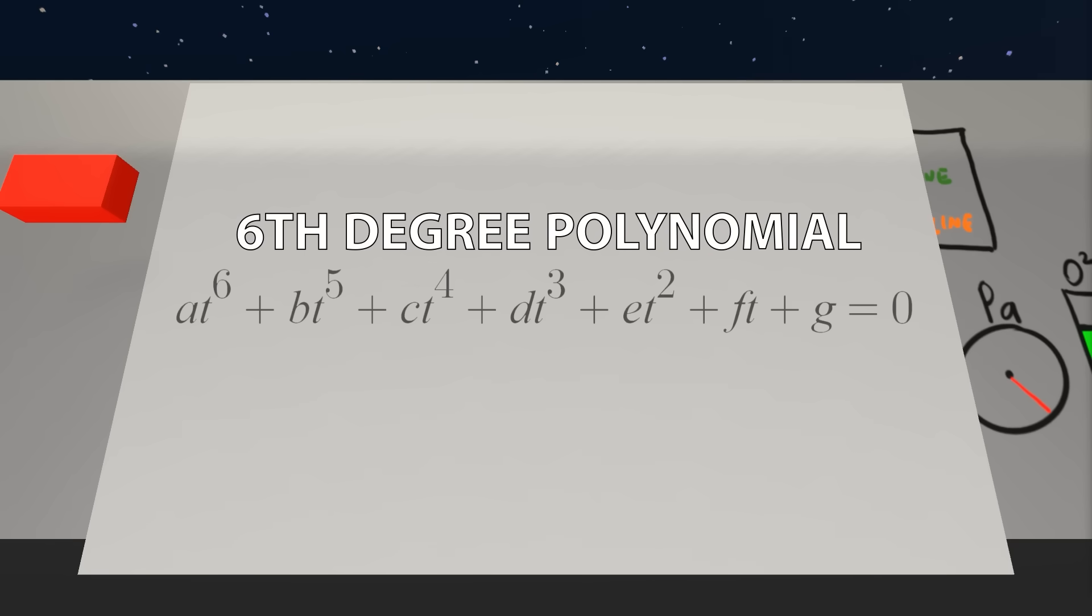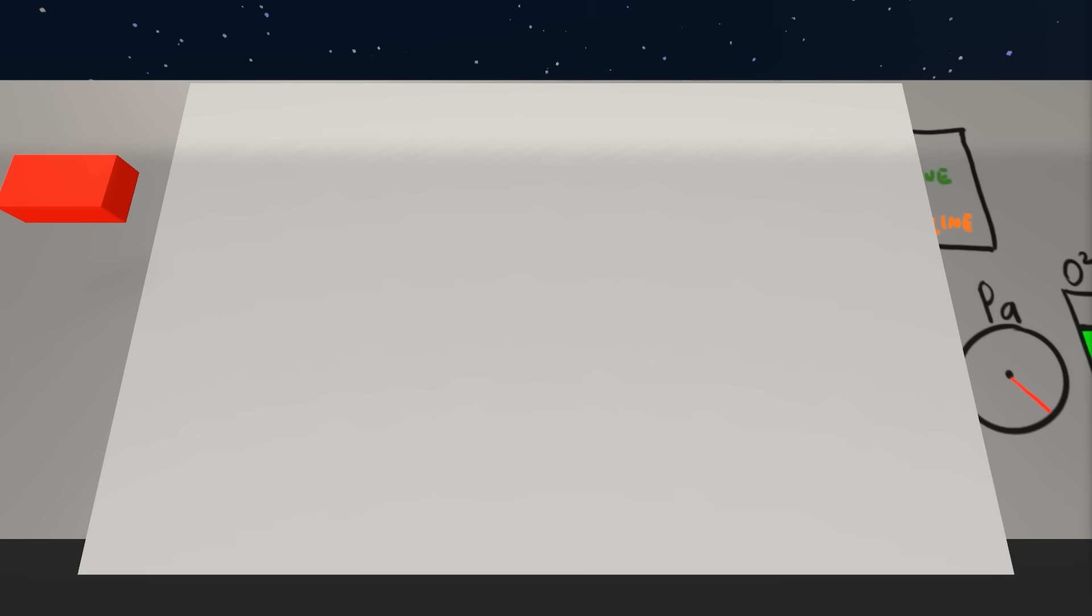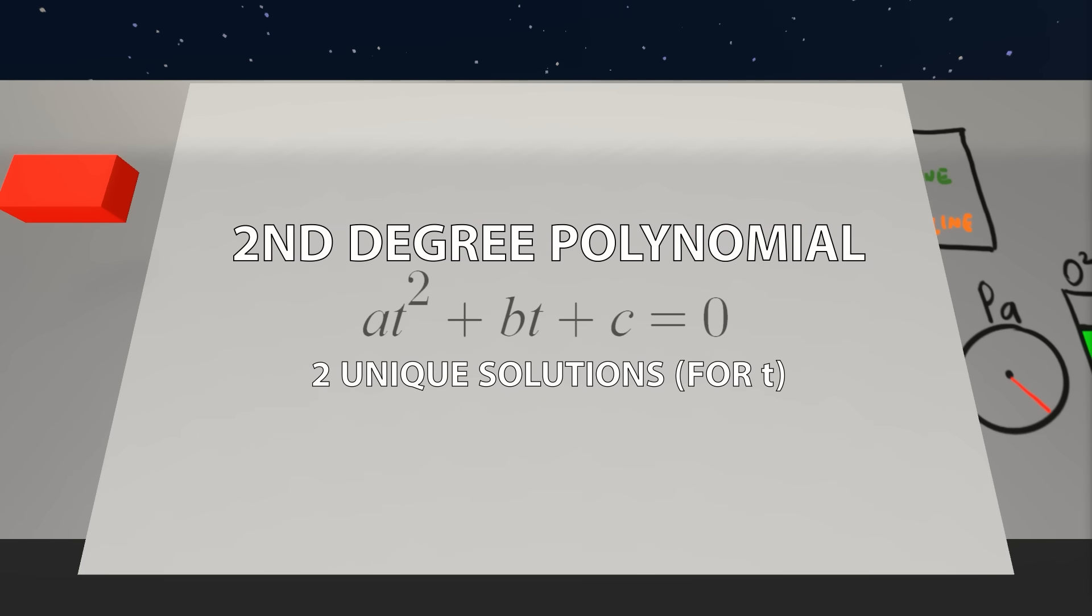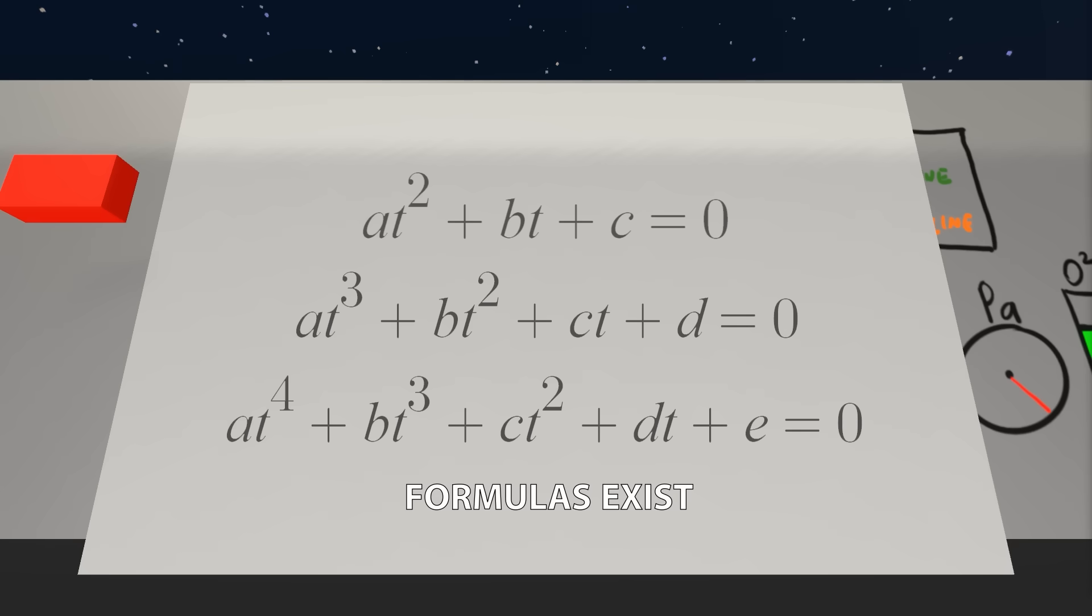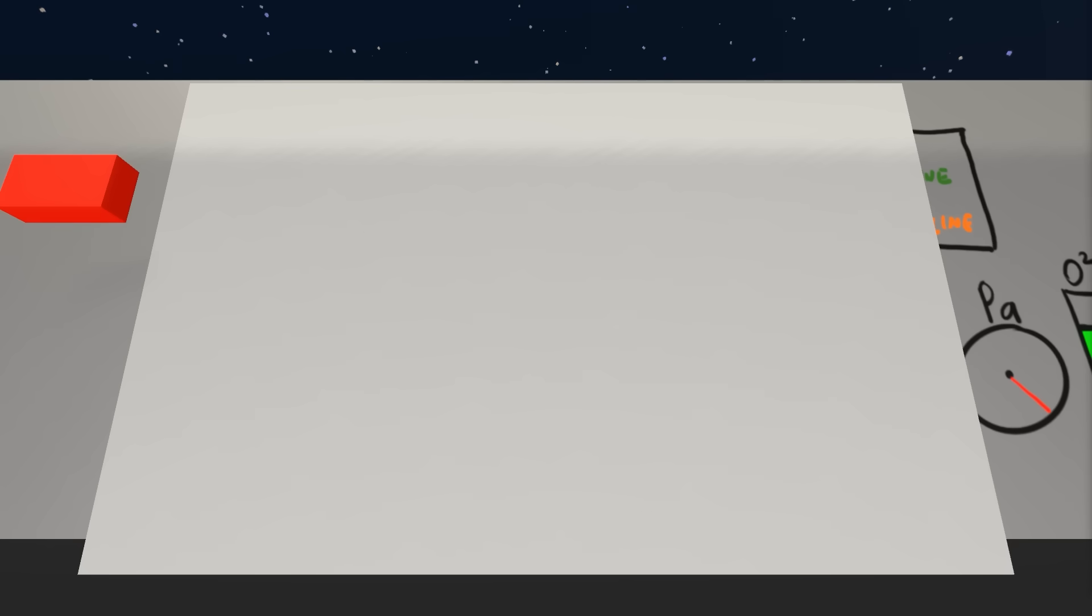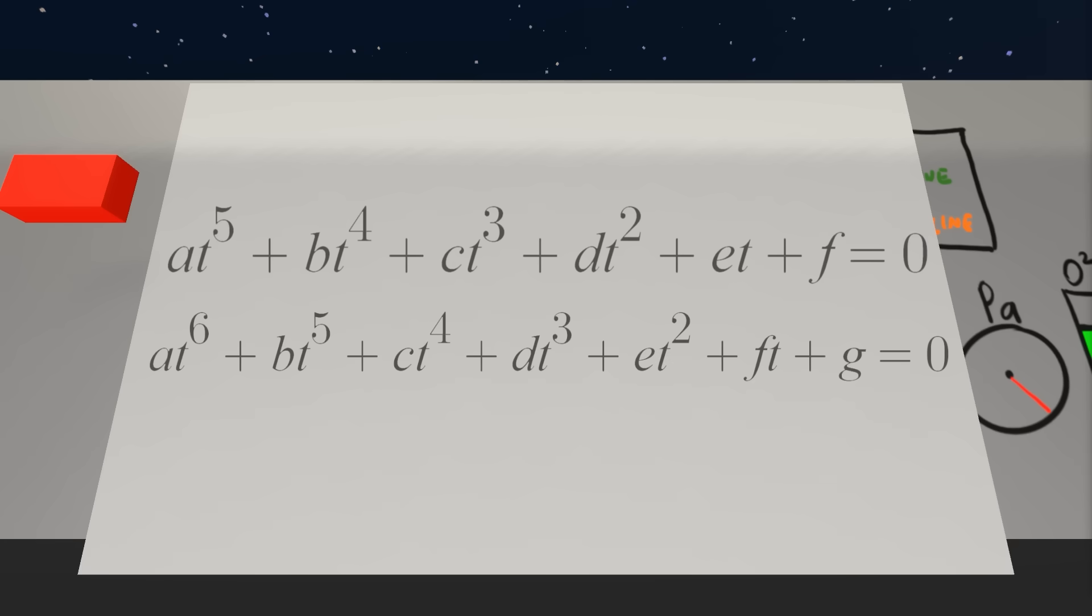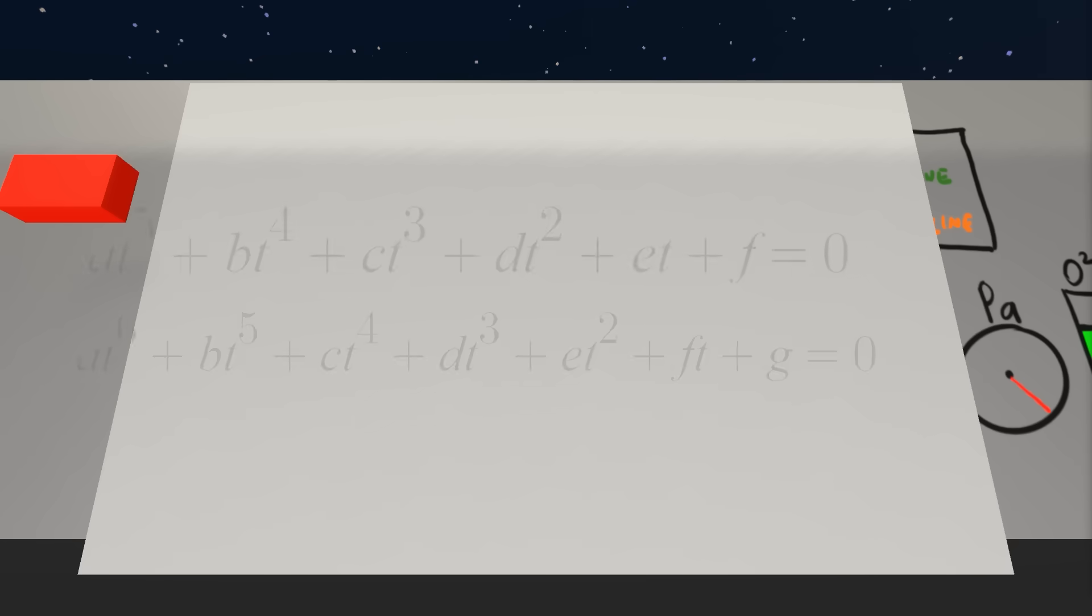You've likely seen polynomials before in the form of quadratics, which are second-degree polynomials. Remember this formula? We can use it to solve quadratics. Similar formulas exist for polynomials of the third and fourth degree, each hideously longer than the previous one. For polynomials of the fifth degree and beyond, there are no general formulas, which means there's no way to extract all the values we need. So what does this mean for our aimbot?